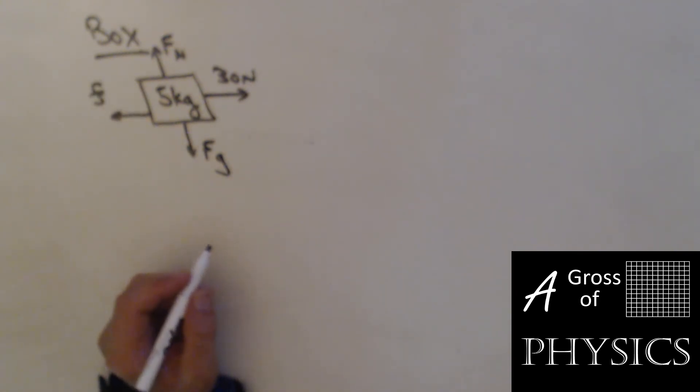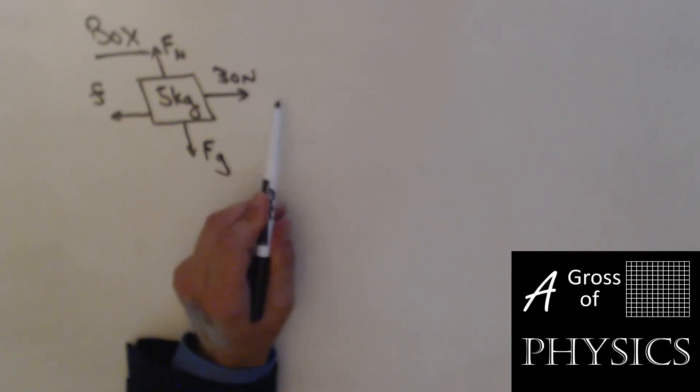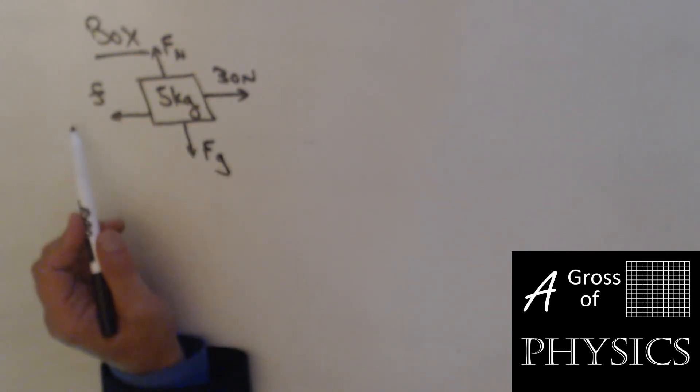This is going to be a good review problem for friction, free body diagrams, and also power. Our ultimate goal is to find the power output by pushing this box. It's the net power. The power forward and the power that friction is taking away would be the net power.